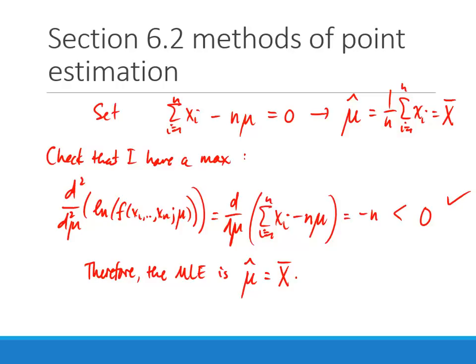Student question: for certain distributions, can we just assume the MLE for mu is always x-bar? No — it doesn't always work out that way. Also remember that the parameter you're estimating isn't necessarily the mean. For example, in the gamma distribution the mean is alpha times beta, so you can't jump directly to that step.